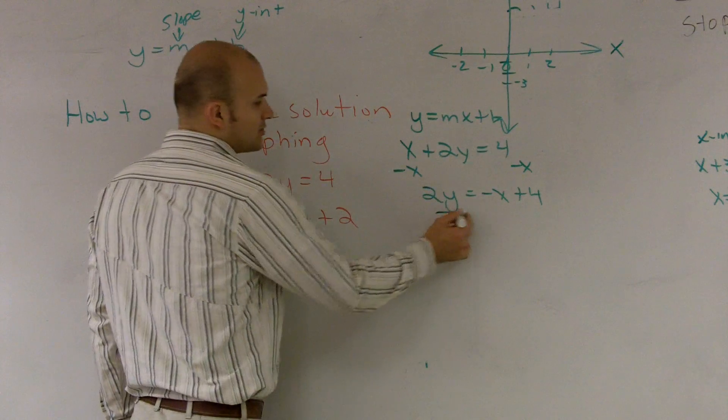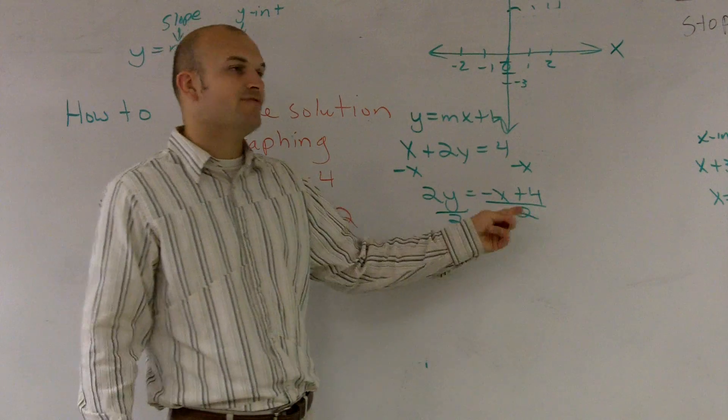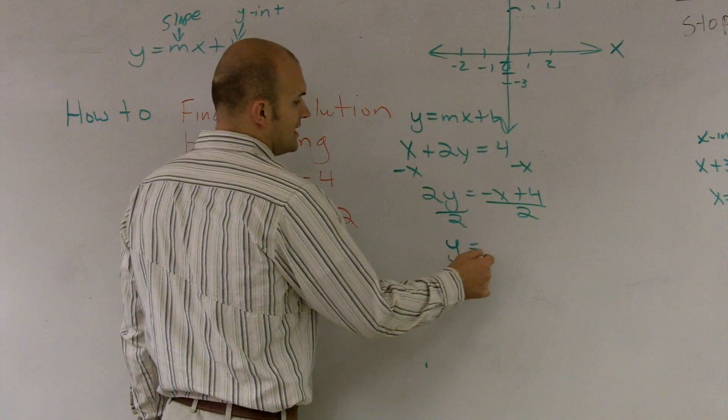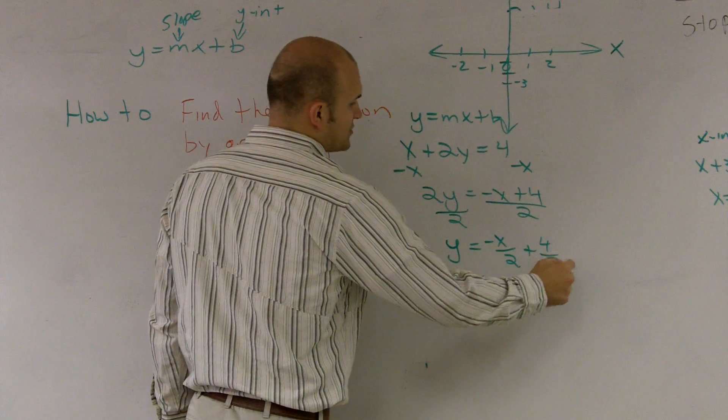Then, now I have to undo my multiplication, so I'm going to divide by 2 on both sides. Remember that you have to make sure that you divide 2 by the x and a 2 by the 4. So therefore, I obtain y equals negative x over 2 plus 4 over 2.